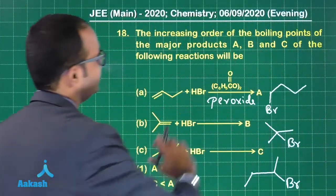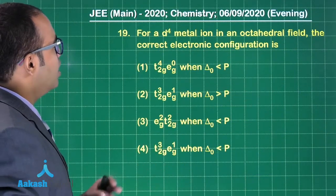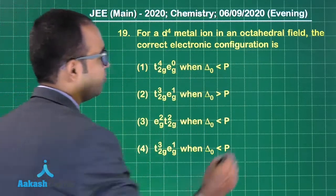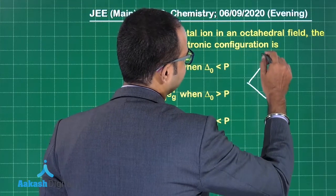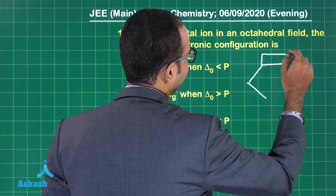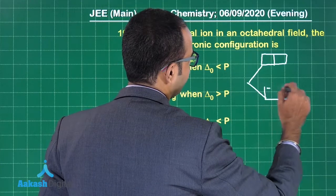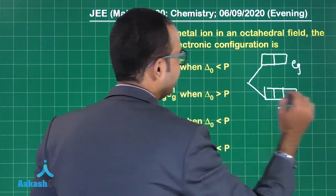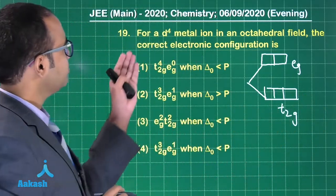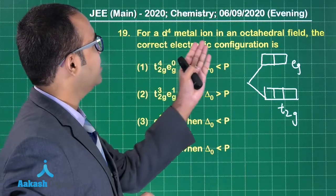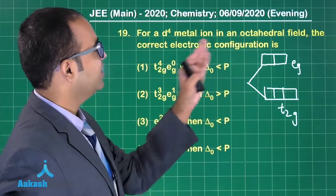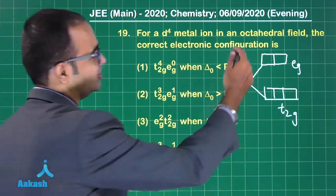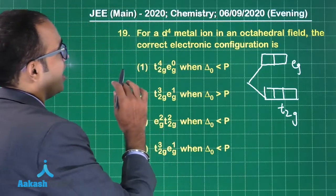Question 19: for a d4 metal ion in an octahedral field. In an octahedral field, the splitting places t2g at lower energy and eg at higher energy. For a d4 metal ion, I have four electrons that need to be fit into these five orbitals.